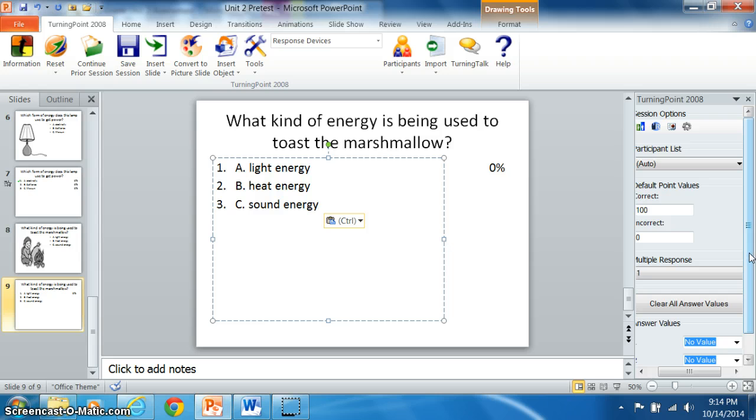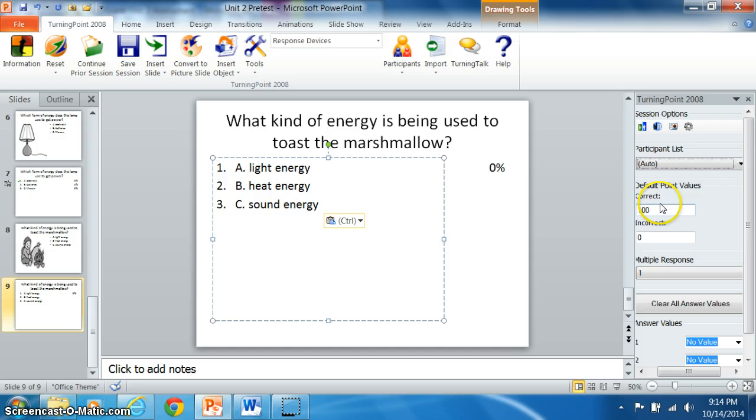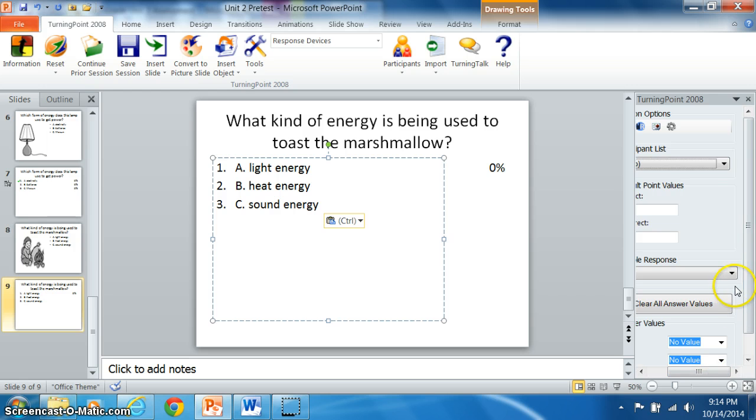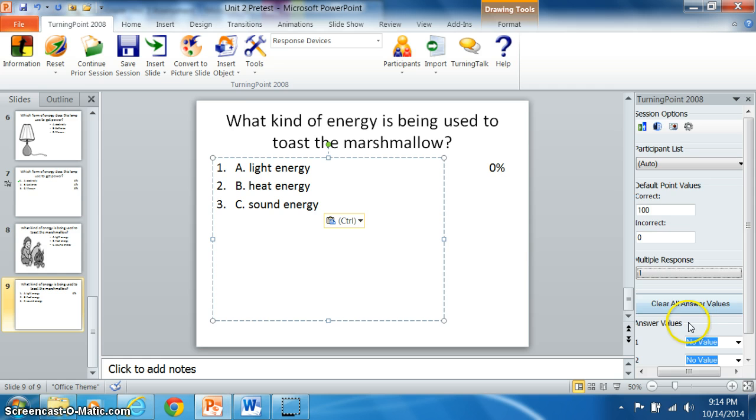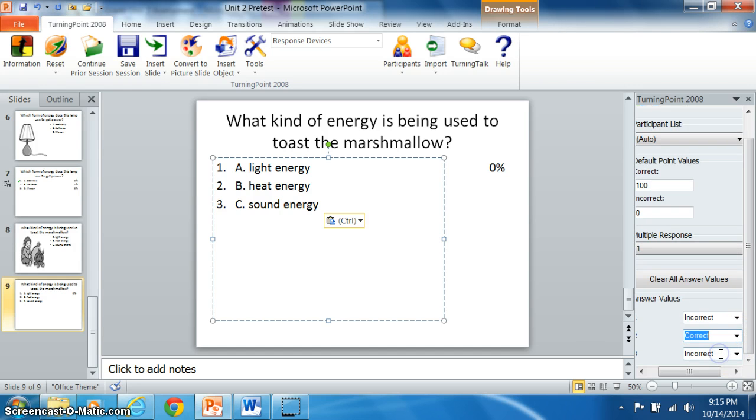Over here in the turning point pane is where you can select if you only want certain participants to participate. If you've got multiple classes and you don't want all of the classes to take the test, you can click on what class you want to take the test. You can change the point value for whether it's correct or how many points they'll lose if it's incorrect. You can change whether you want multiple responses or if you just want it to be one response. Here is where you can put in whether the answer is correct or incorrect. This answer being B, I'm going to select correct.